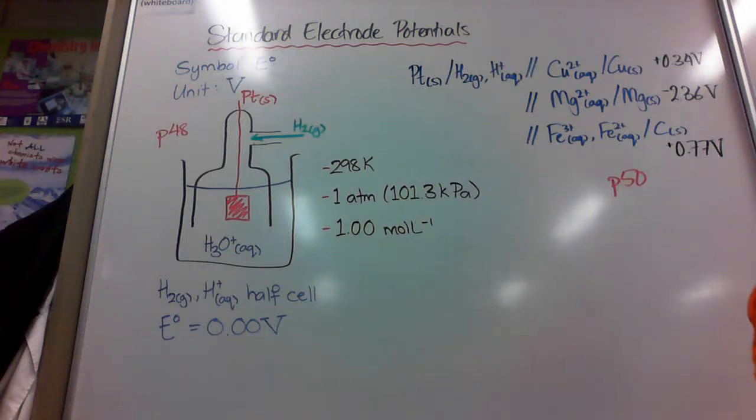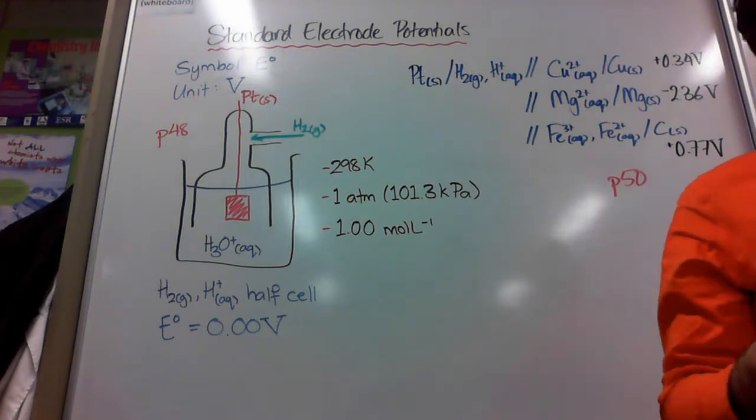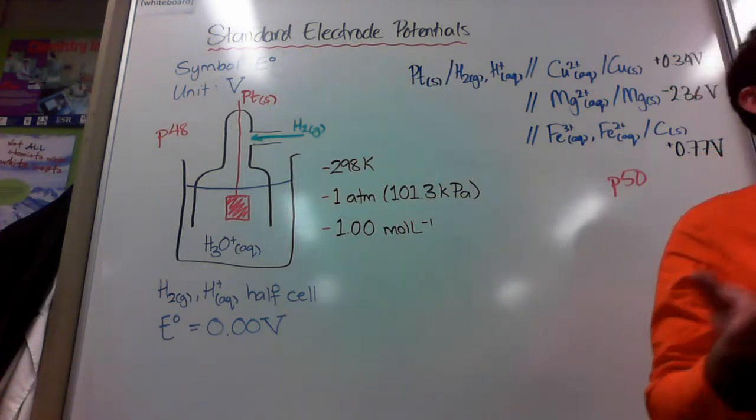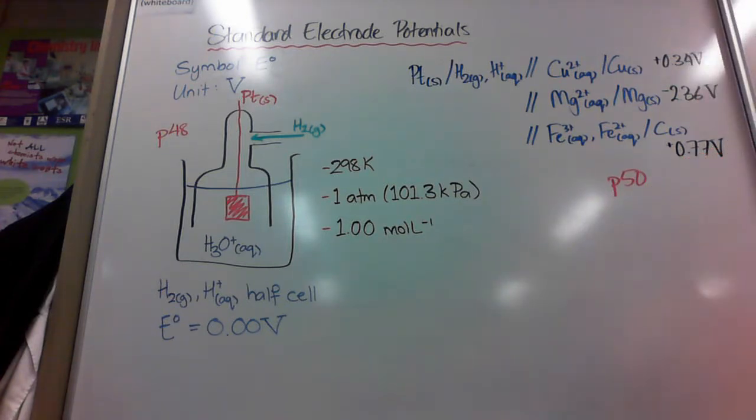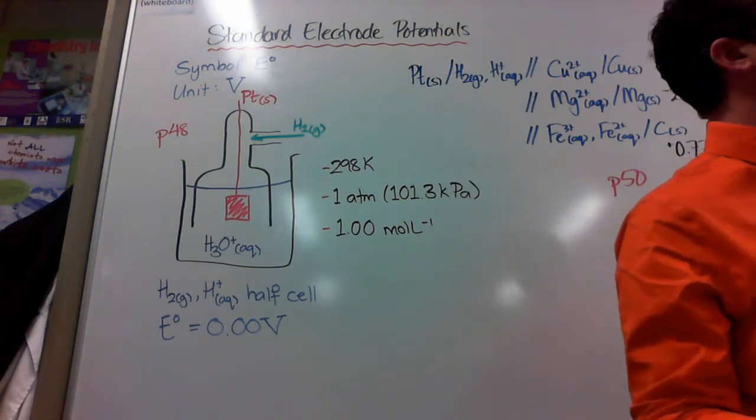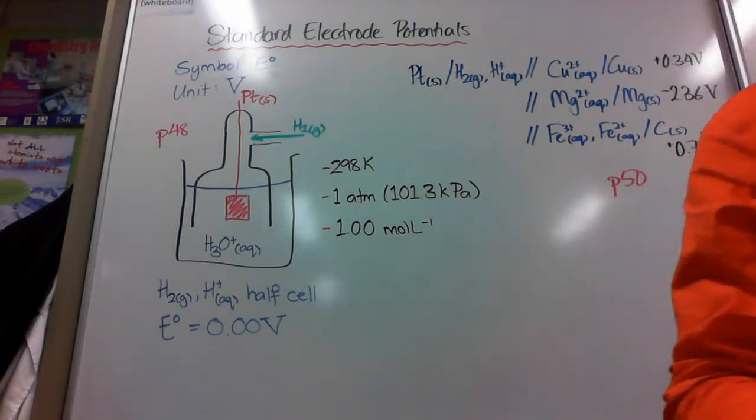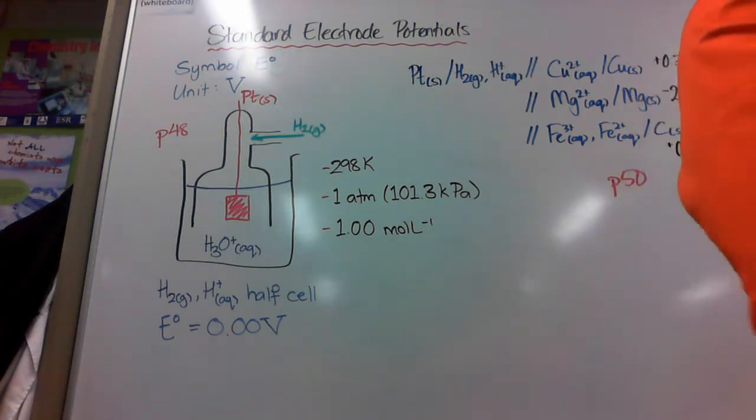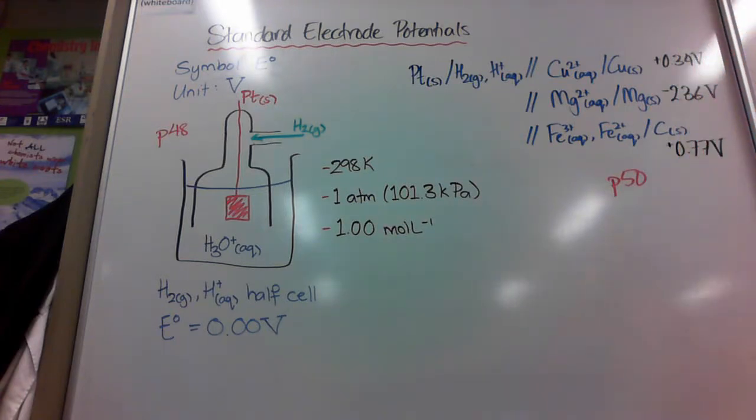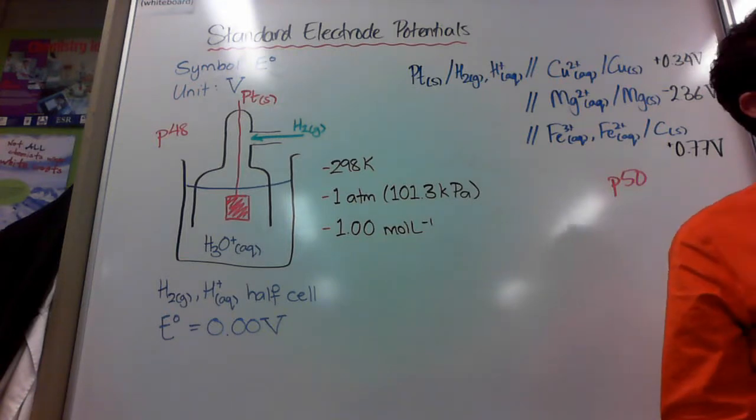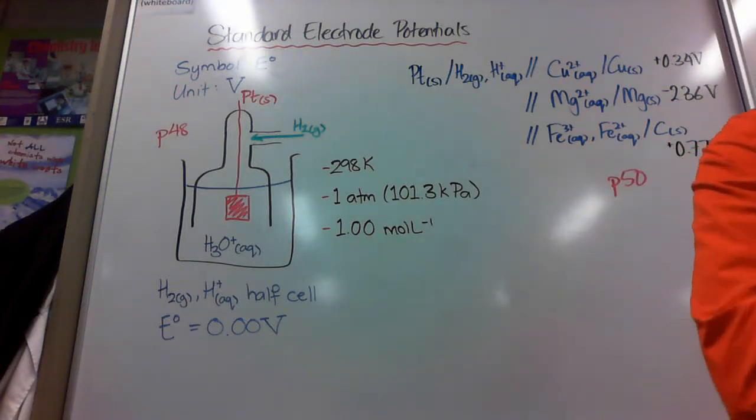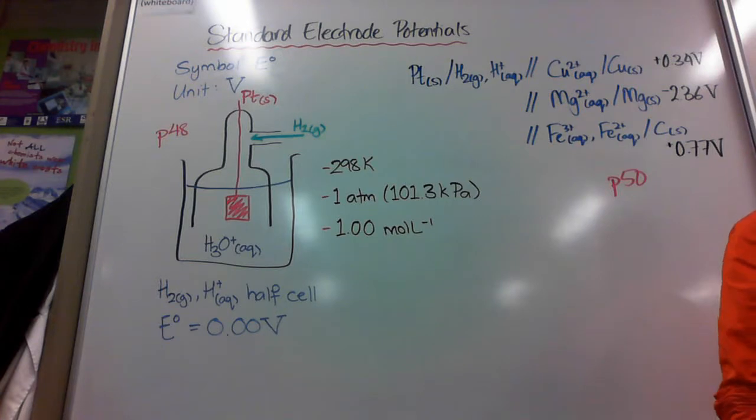We've so far looked at half cells and putting those together to create a cell. We've also looked at the voltage of those, and part of that experiment was asking us to work out a theoretical value for that, and we're not sure how to do that yet. To do that we need to know about things called standard electrode potentials. They're sometimes called reduction potentials or standard reduction potentials as well. This is because of how they're calculated.